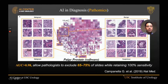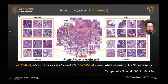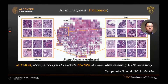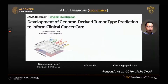In pathomics, the PAGE prostate software can exclude up to 75% of pathology slides that don't need to be reviewed, while retaining 100% sensitivity in identifying where malignancy is, where benign tissue is, and where there are suspicious lesions requiring further evaluation.